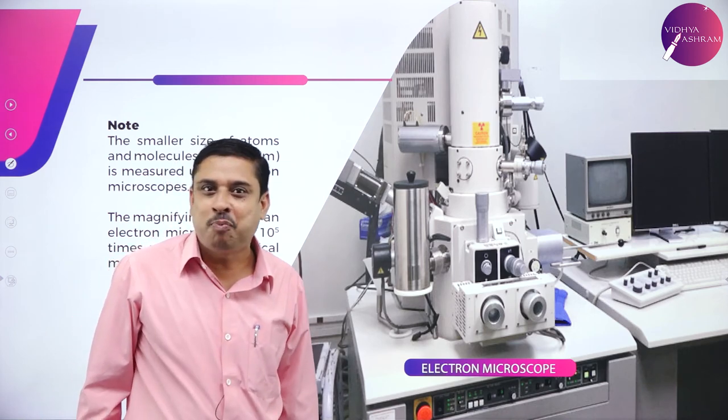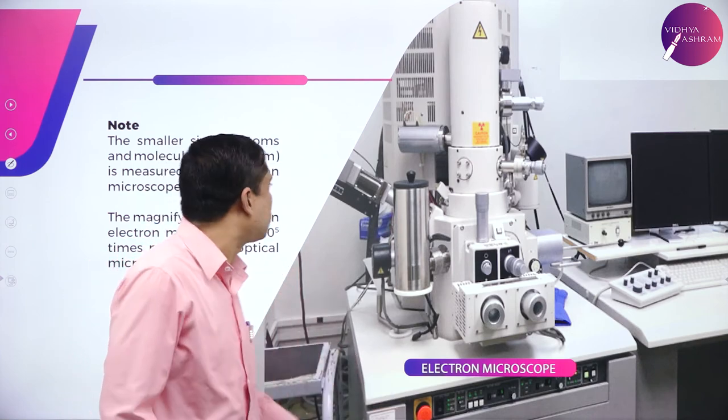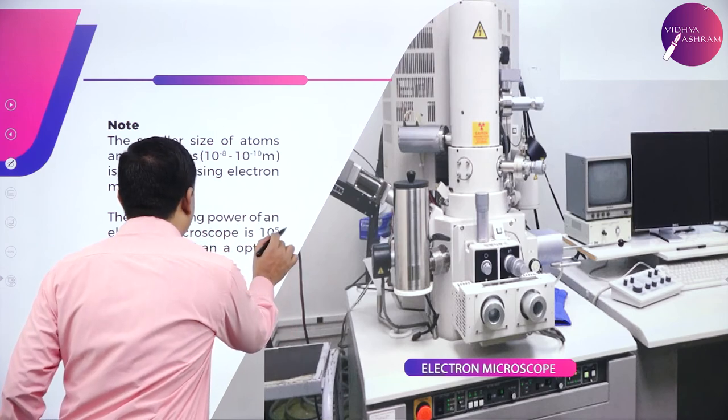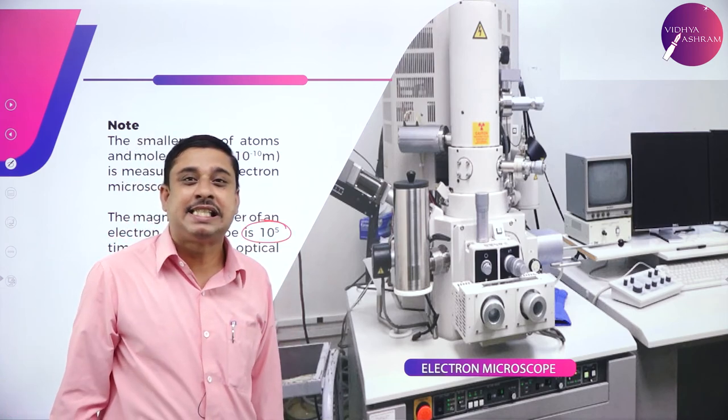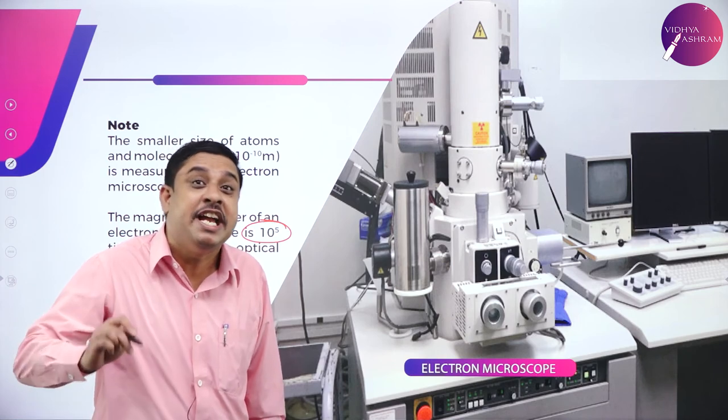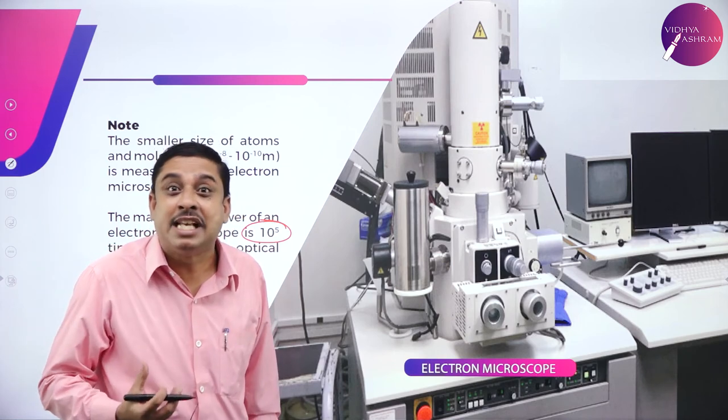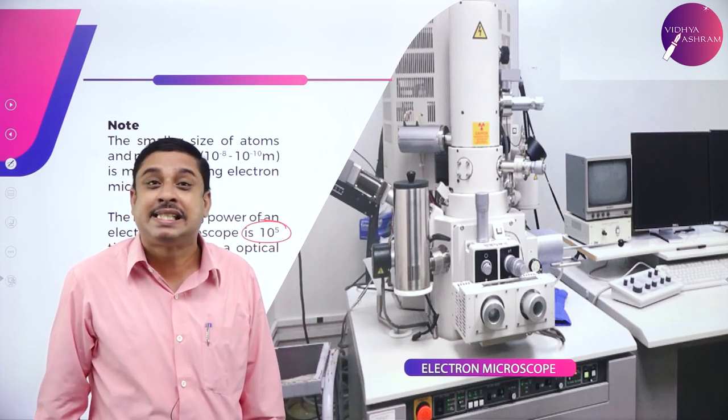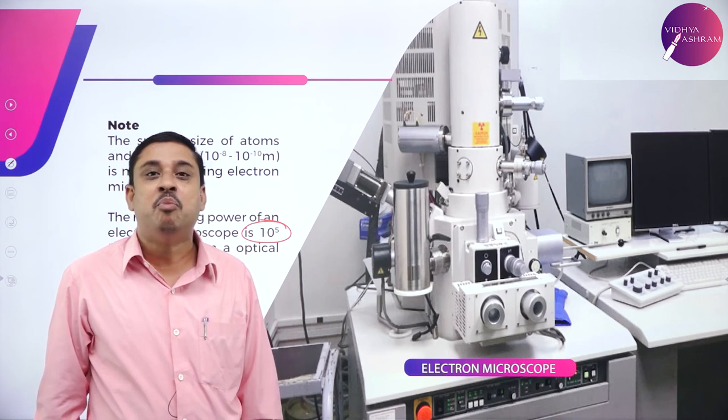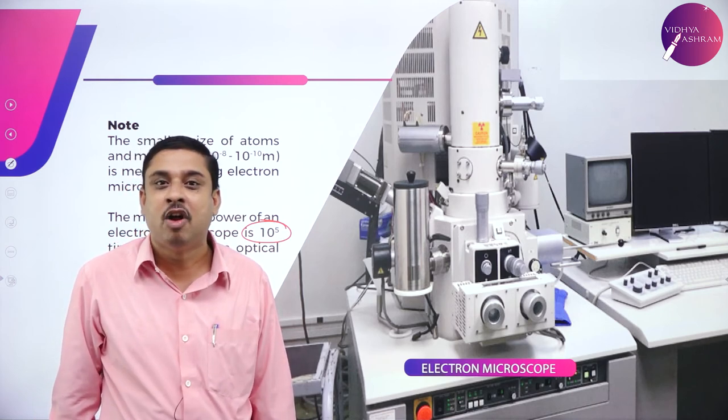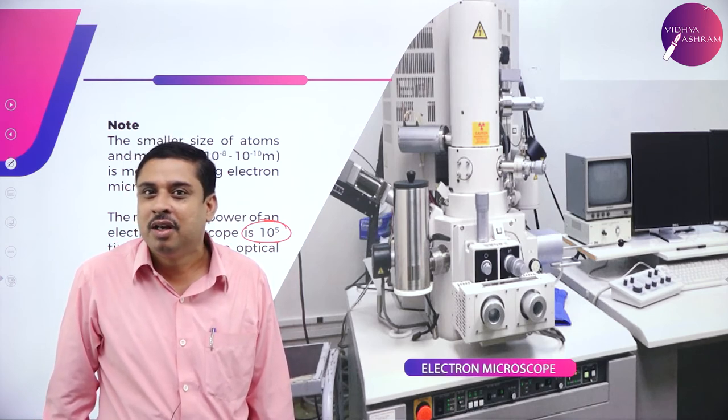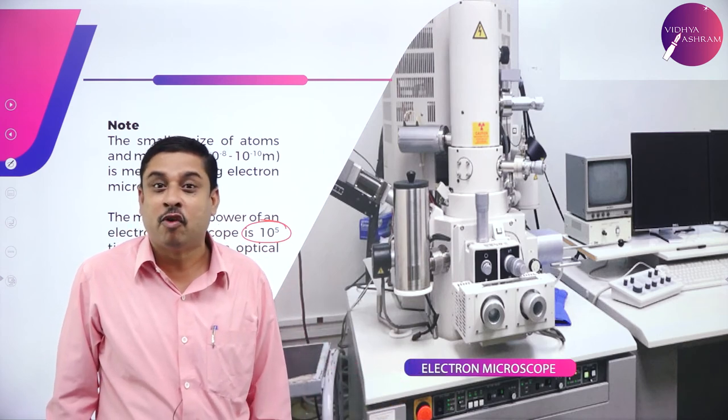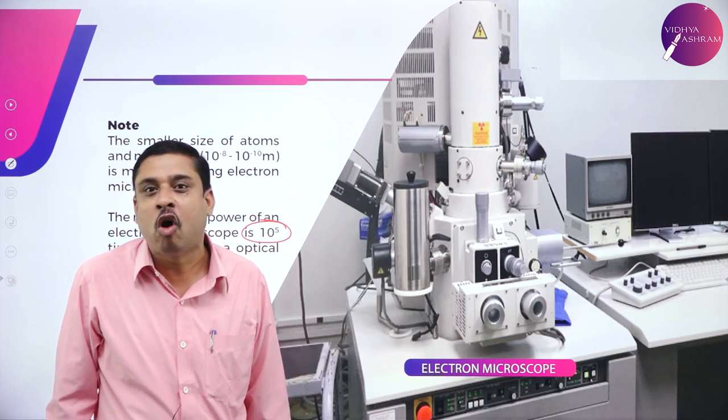Which is better? Optical microscope or electron microscope? Here you see the magnifying power of electron microscope is 10^5 times. Resolution obtained from an electron microscope is 10^5 times more than that of an optical microscope. Resolution is super fine here. That is the reason for which we use electron microscope.